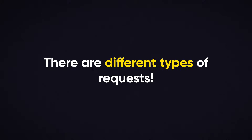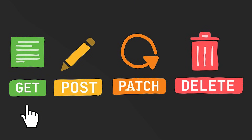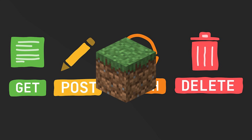There are different types of requests you can send. GET requests ask for information, like retrieving the latest news articles. POST requests send new information, like submitting a form. PUT requests update existing information, and DELETE requests remove data. These are the basic building blocks of how APIs communicate with servers.